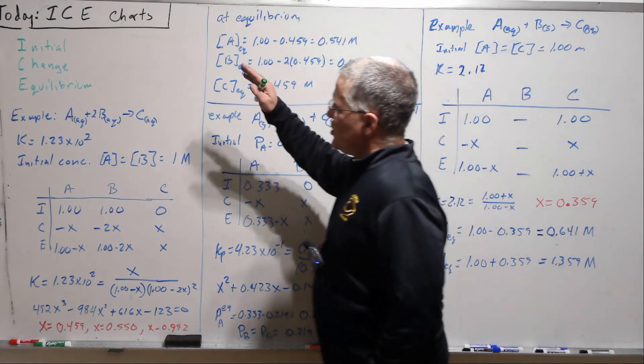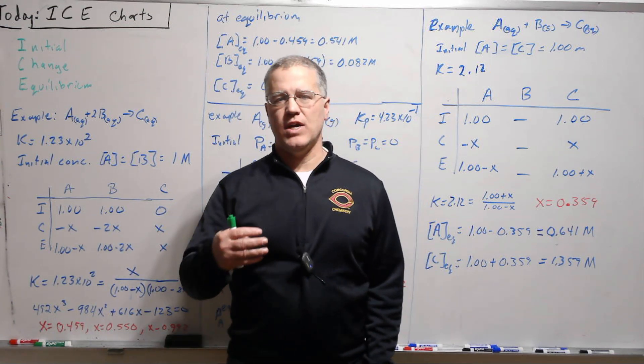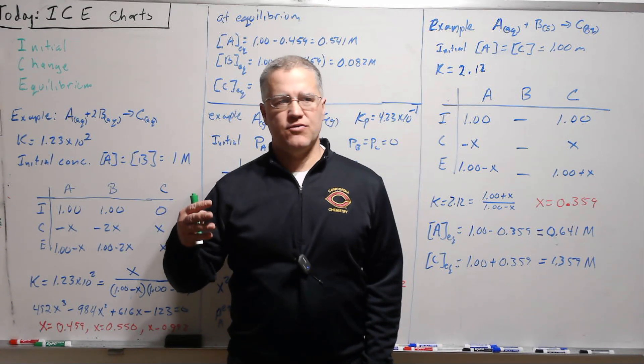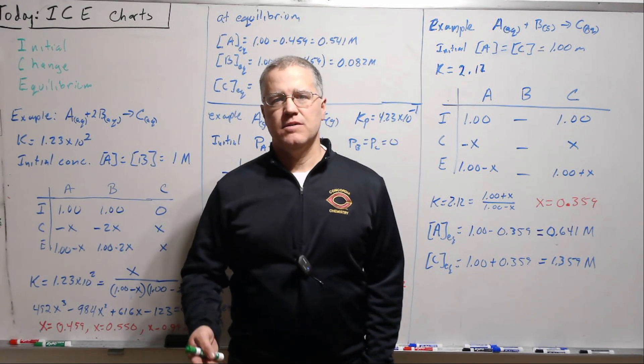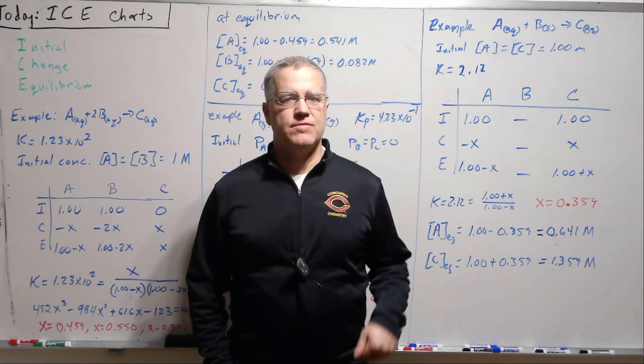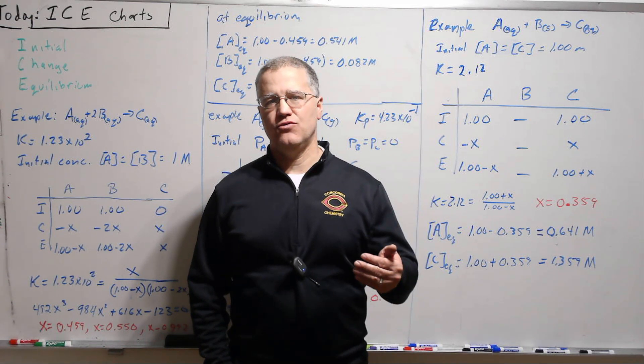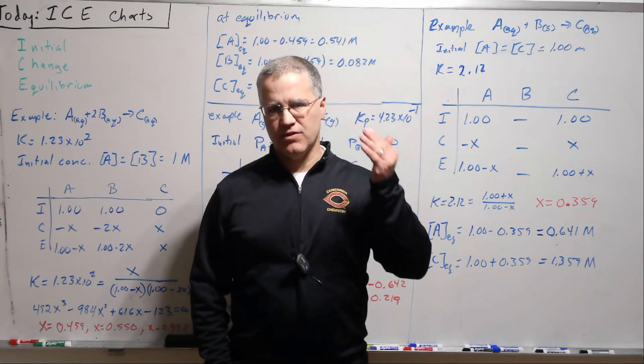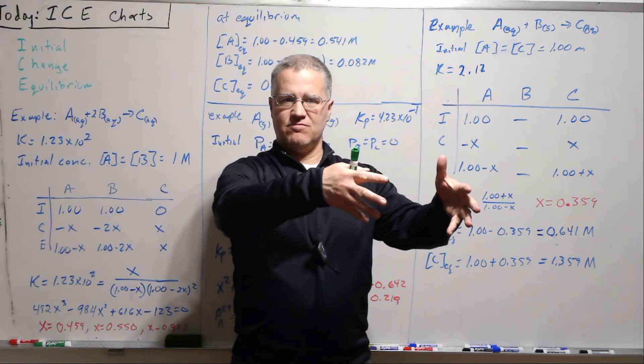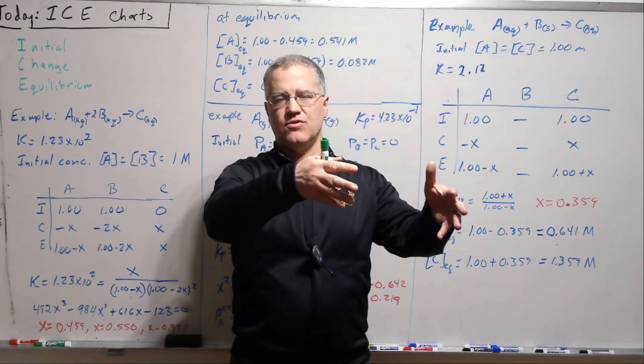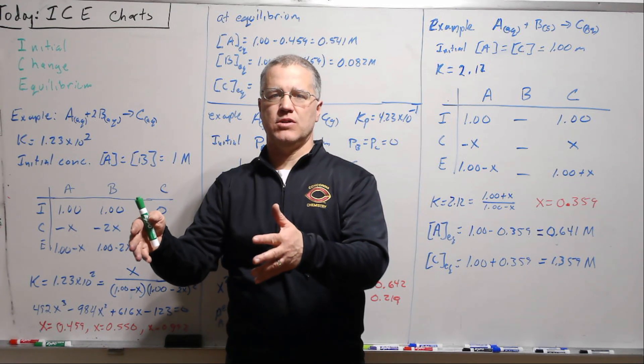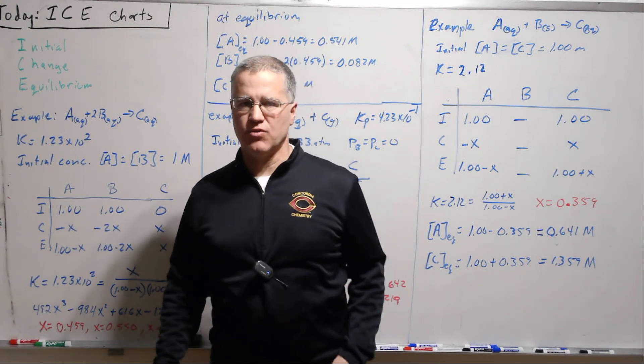Now the ICE chart is really just a nice bookkeeping way of calculating things. It's nothing profound about it, but through the course of history of people teaching general chemistry, this has become sort of the standard way to approach these problems. The basic problem is if we've got a chemical reaction and we got the equilibrium constant, if we mix certain concentrations of reactants and products, what do we have at the end? What does it come to at equilibrium?